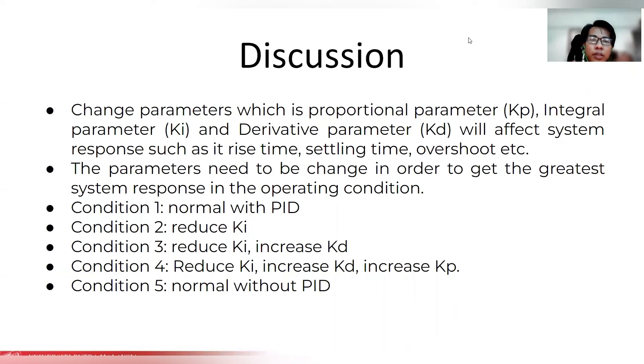I will continue with the discussion part. By changing the parameters, which are the proportional parameter Kp, integral parameter Ki, and derivative parameter Kd, it will affect system response such as rise time, settling time, overshoot, etc. The parameters need to be changed in order to get the greatest system response in the operating condition. There are five conditions that being applied in the results.